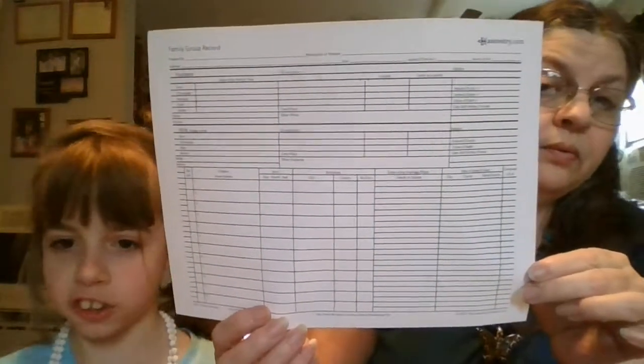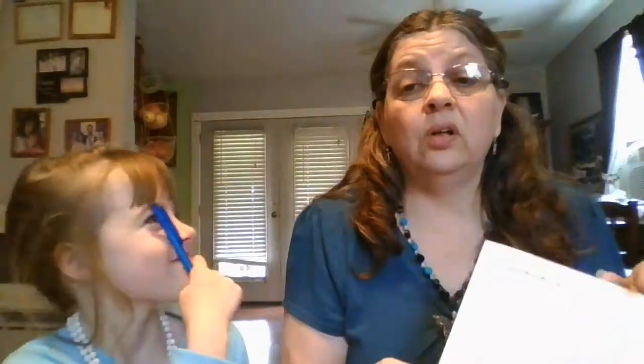Here's a family group record. And here's a great record to have — it's a correspondence record, and it keeps up with your contacts, like who you get a hold of and who you've talked to.